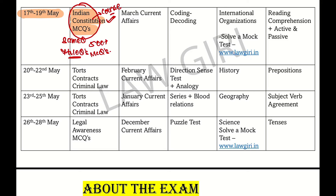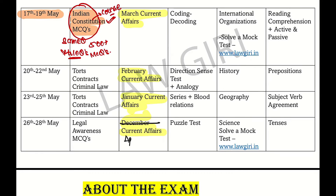If we talk about current affairs, there will be current affairs from March, February, January and December. If you don't want to do December current affairs, you need to cover April. You will do current affairs up to March 15th or March 30th. If you have your notes, you can mark and review them.